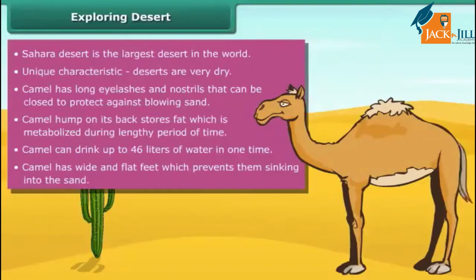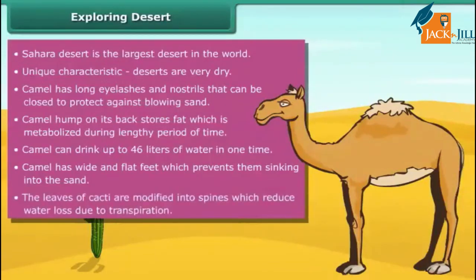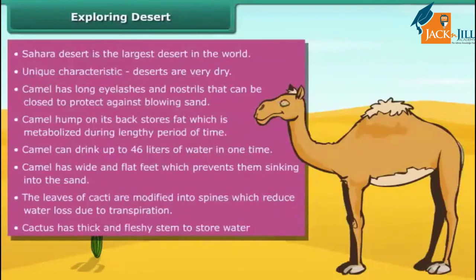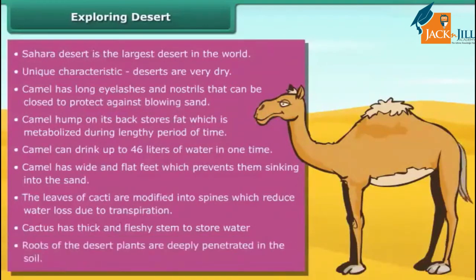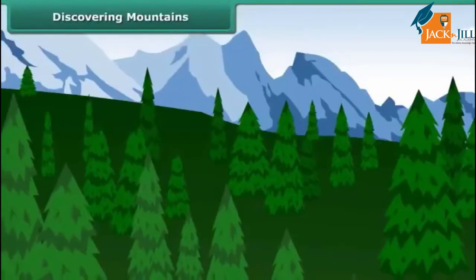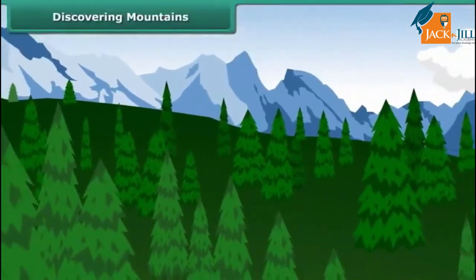Plants like cacti also show various adaptations to survive in dry and hot environments. The leaves of cacti are modified into spines, which reduce water loss due to transpiration. Cactus has a thick and fleshy stem to store water. Roots of desert plants deeply penetrate into the soil to absorb water.